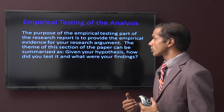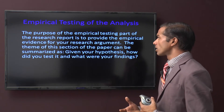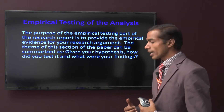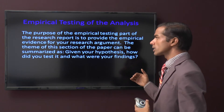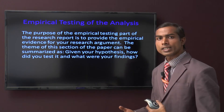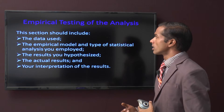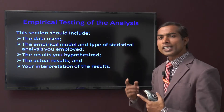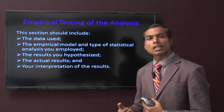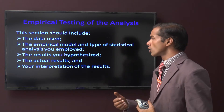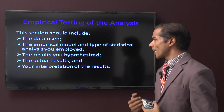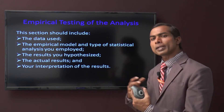The empirical testing section provides the empirical evidence for a research argument. Its theme can be summarized as: given your hypothesis, how did you test it and what were your findings? This section should include the data used, the empirical model, and the type of statistical analysis you employed, as well as the results you hypothesized, the actual results, and your interpretation of the results.